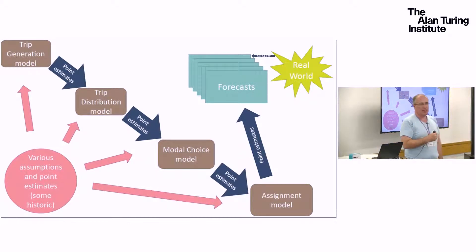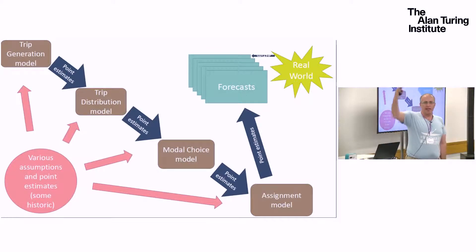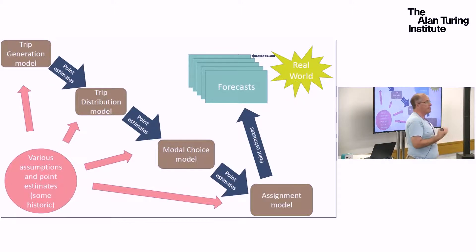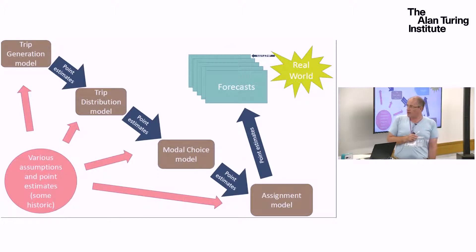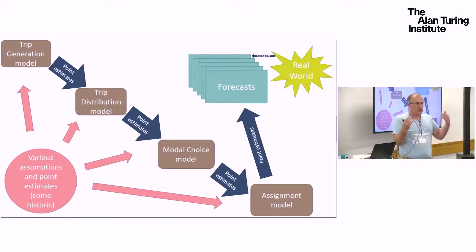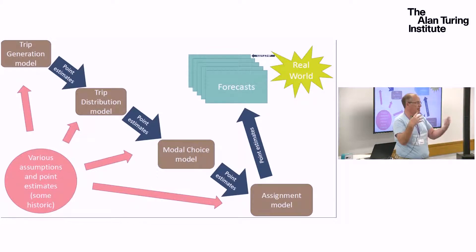I want to step aside and look at how transport modelling works. The illustration shows the four-step transport model — that in theory is what happens when people build a strategic transport model. I don't get the impression it happens that tidily, but that's what's supposed to happen. You get some forecasts, and for the model to be valid you make a forecast for the present day and make a very limited comparison with what you see in the real world from a few sensors.